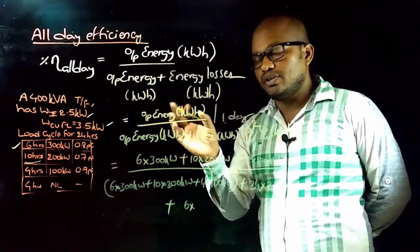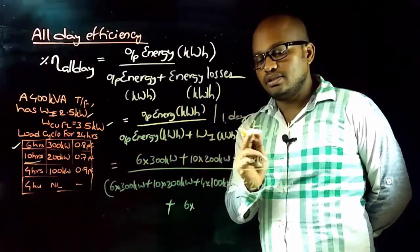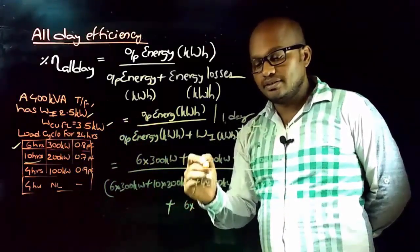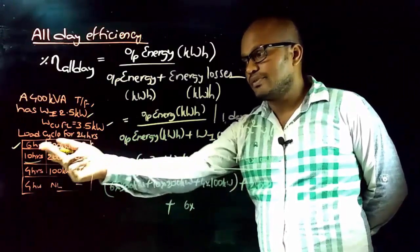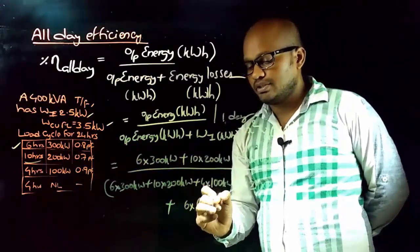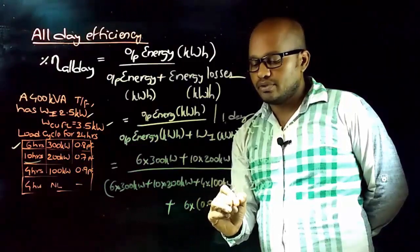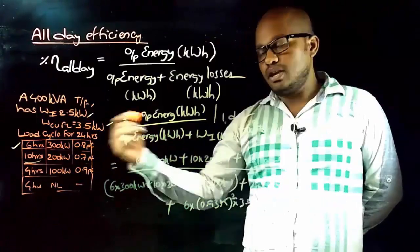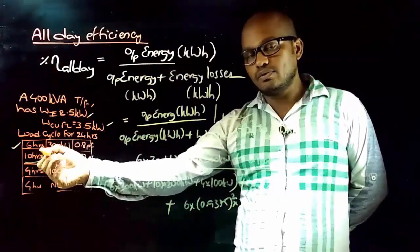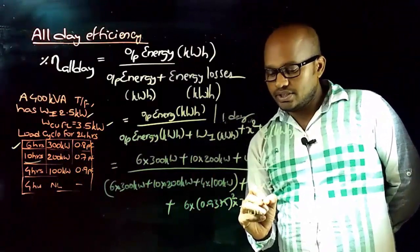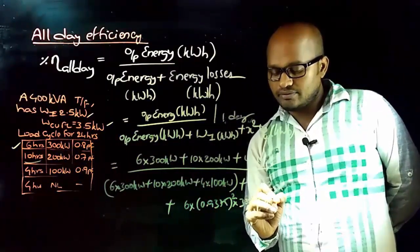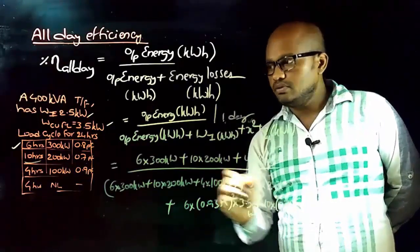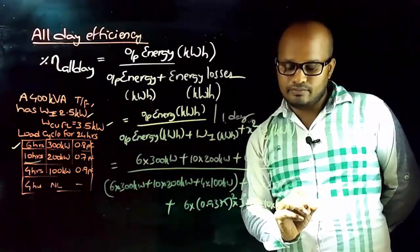Copper losses depend on the load, so they vary for different loading periods. For the first 6 hours, x = 0.9375, so copper loss = 6 × (0.9375)² × 3.5 kW. For the next 10 hours, x = 0.714, so copper loss = 10 × (0.714)² × 3.5 kW.